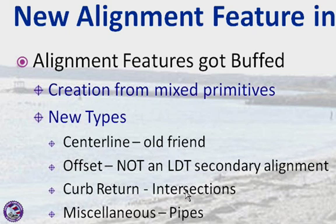And then there's a cousin called the curb return, which exists purely for intersections. It's a specialized type of alignment, so you won't see them often, but you can make them yourself and add them back into intersections. In general, they have to do with what happens to the traveled way as we go through an intersection.